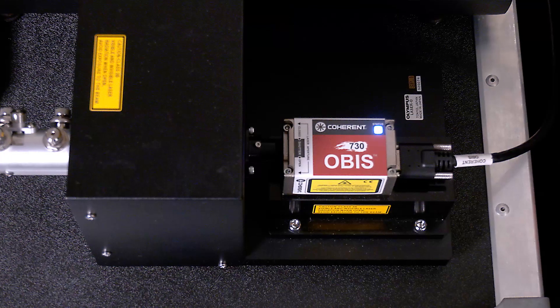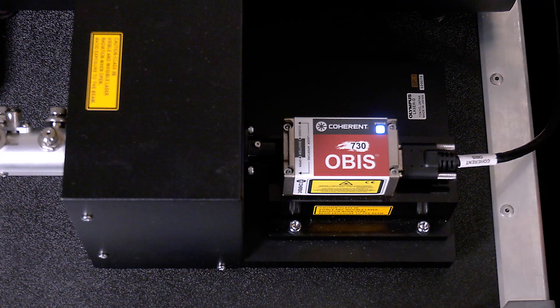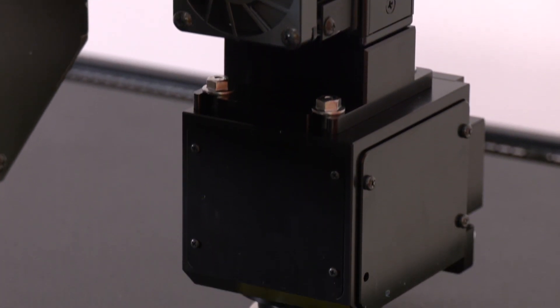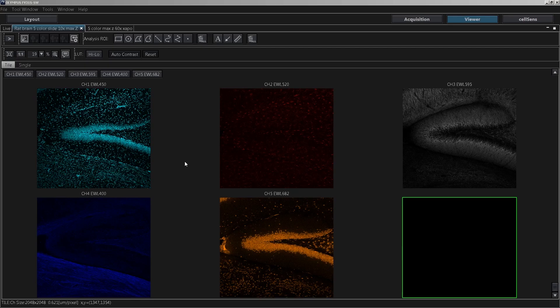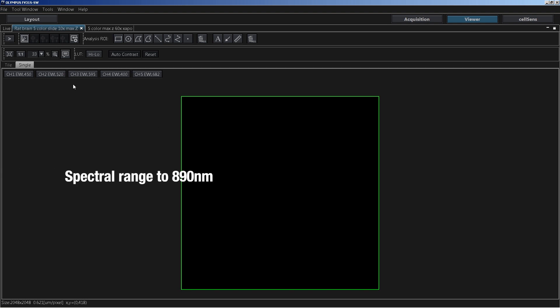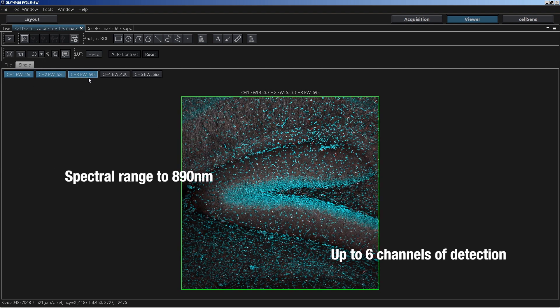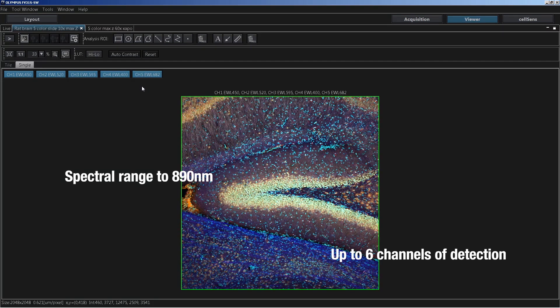The FE3000 RED system overcomes these issues by using near-infrared light to improve the performance of a confocal microscope. First, the system enhances your capabilities for image multiplexing. It expands the spectral range to 890 nm and offers up to 6 channels of detection. This significantly increases your multiplexing potential and the amount of information that you can extract from one experiment.